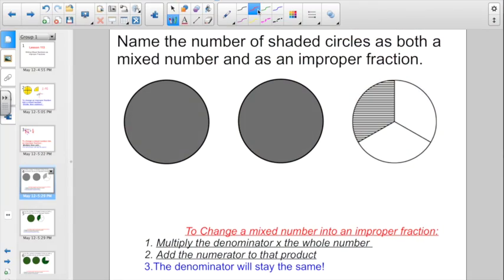So we might run into some problems that look like this. Name the number of shaded circles as both a mixed number and as an improper fraction. So let's write it as a mixed number first. It looks to me like I have two whole circles here, and this last one, 1 third, is shaded.